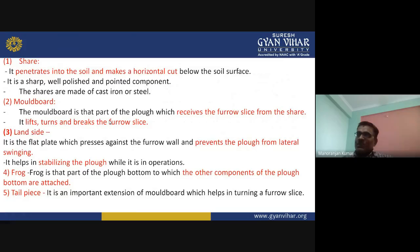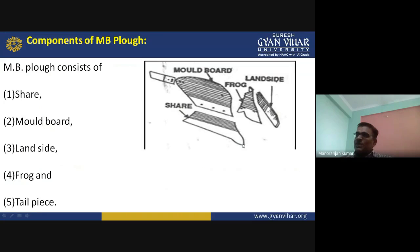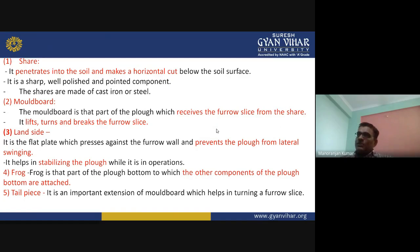The first part is the share. It penetrates into the soil and makes a horizontal cut below the soil surface. The main function of the share is to cut the soil. This share is a sharp, well-polished and pointed component made of cast iron or steel. The second component is the moldboard — that is why the name of this equipment is moldboard plough. It receives the furrow slice from the share, then lifts the soil, turns the soil, and breaks that furrow slice.